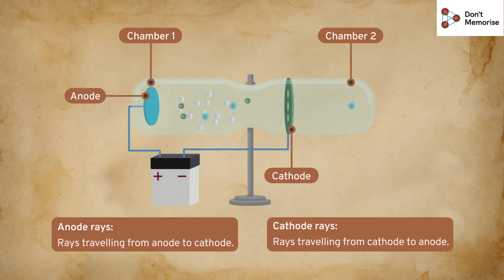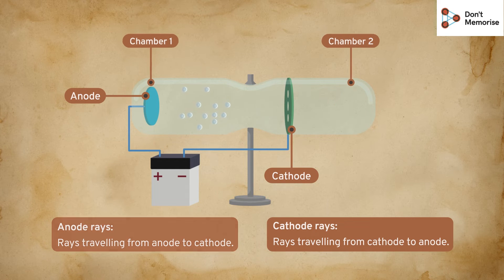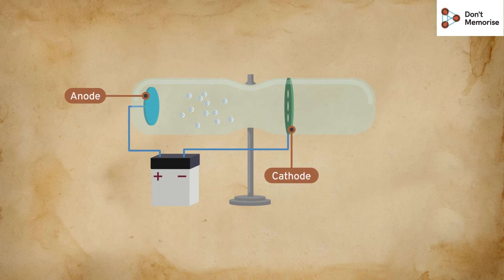These particles moved towards the cathode, passing through the holes in the cathode plate and produced a beam at the back of the cathode. Since they moved from anode to cathode, they were called anode rays. Goldstein later tested these rays.